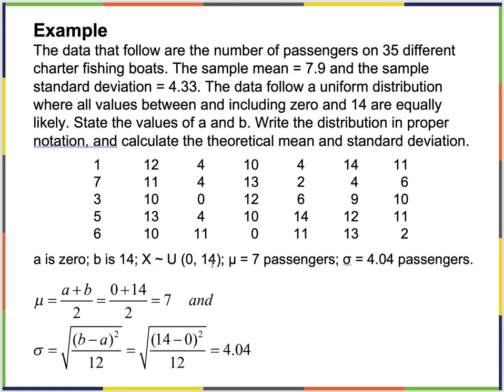The theoretical mean is (14+0)/2 = 7, and applying the standard deviation formula — square root of (14-0)² divided by 12 — comes out to approximately 4.04.